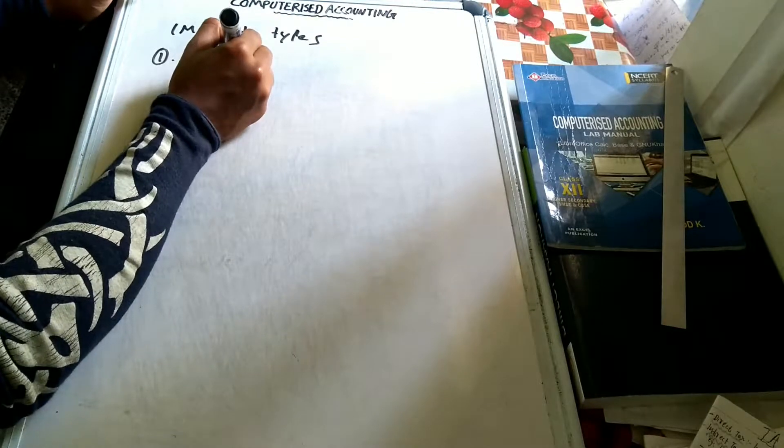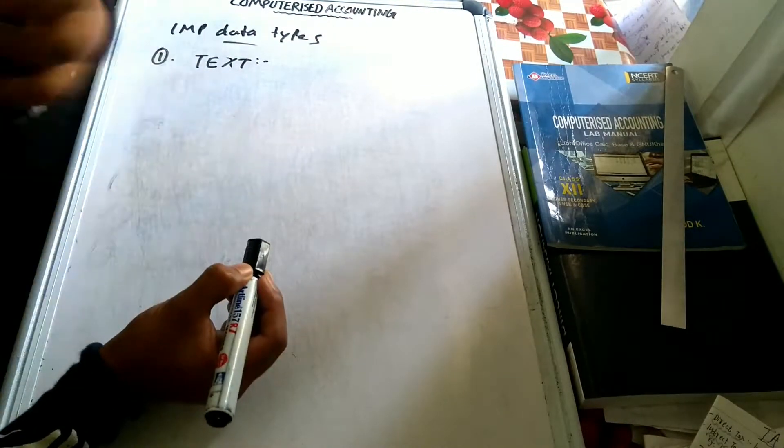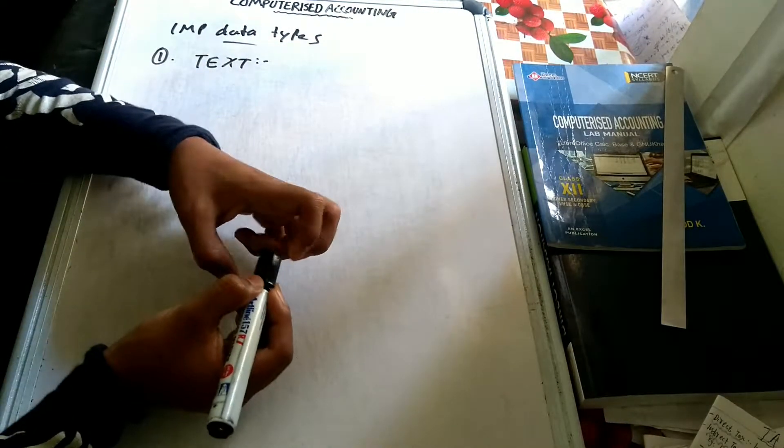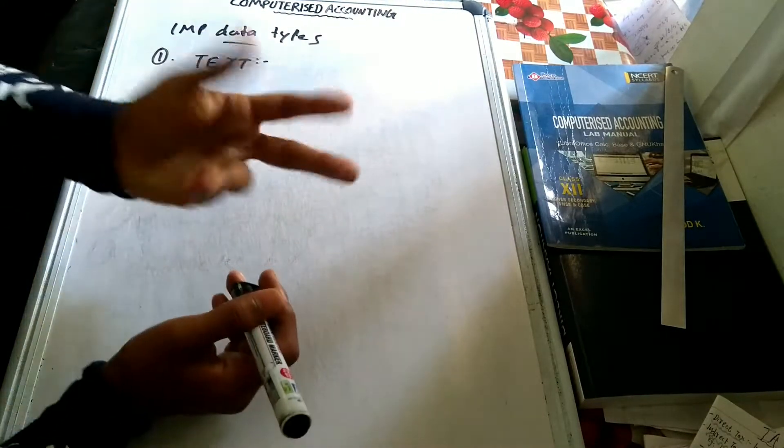First important data type is text. We can select text — for example, employee name, account type, and designations are typed as text.